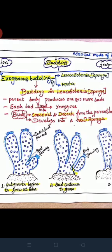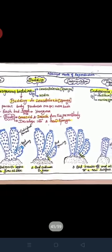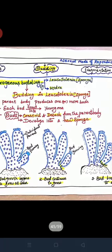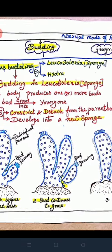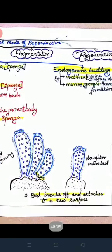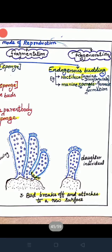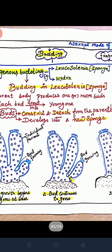There are two types of budding: exogenous budding and endogenous budding. In exogenous budding, two examples are Leucosolenia sponges and hydra. In endogenous budding, two examples are Noctiluca (a marine dinoflagellate) and freshwater sponge — and in some marine sponges, gemmule formation occurs. First, we will see exogenous budding.